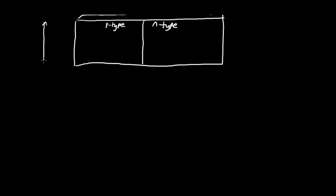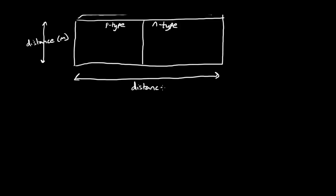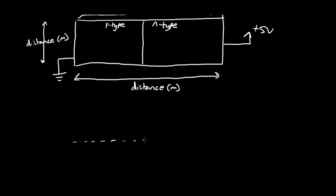Let me draw an energy band diagram to try to motivate more clearly what's happening. The x-axis is distance in meters, and the y-axis is also distance. I'm going to draw the energy band diagram for this diode. I'll start by drawing a Fermi level — a flat Fermi level — because we're going to assume there's no current in the system, that it's in equilibrium. So I'll draw a flat line: that's E_F, the Fermi level.